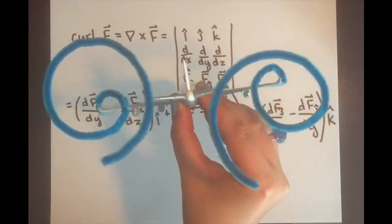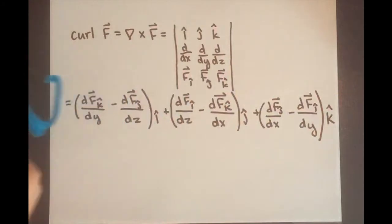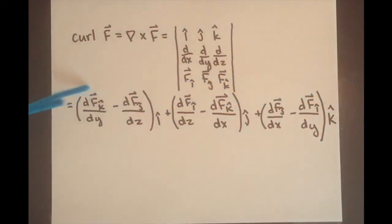If the vorticity is large, it will look like this. If the vorticity is small, it will look like this. If the vorticity is equal to zero, there will be no vortex.